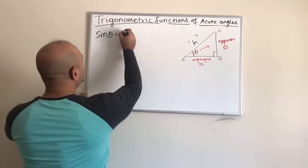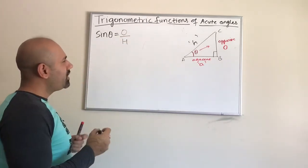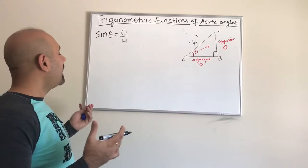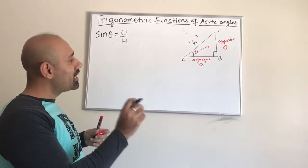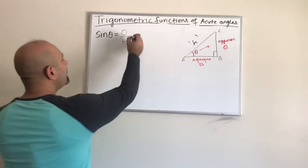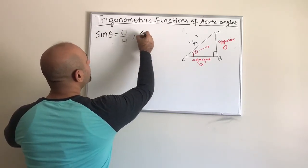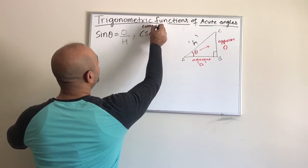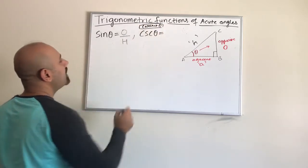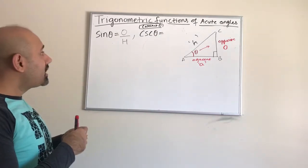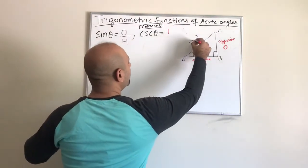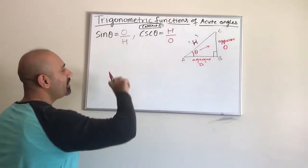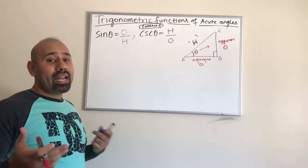Sine is defined as the ratio of the opposite over the hypotenuse. The sine of any reference angle in a right triangle is the length of the opposite divided by the length of the hypotenuse. The other quantity related to sine is called the cosecant, written in short form as csc theta but read as cosecant of theta. Cosecant of theta is the ratio of the hypotenuse over the opposite — it is basically the reciprocal of sine.